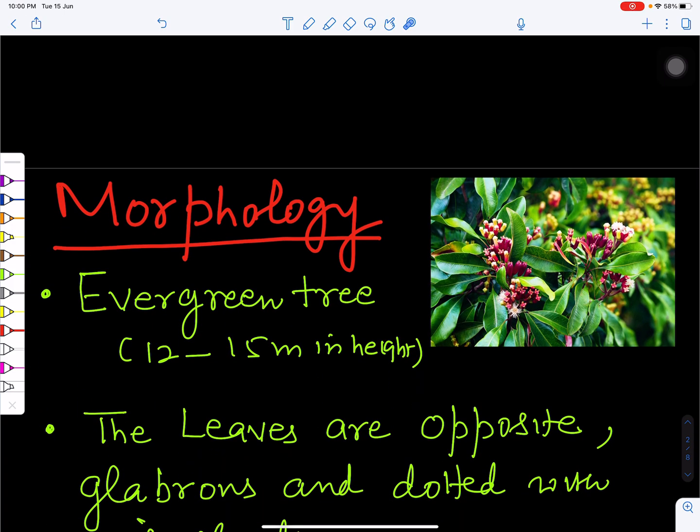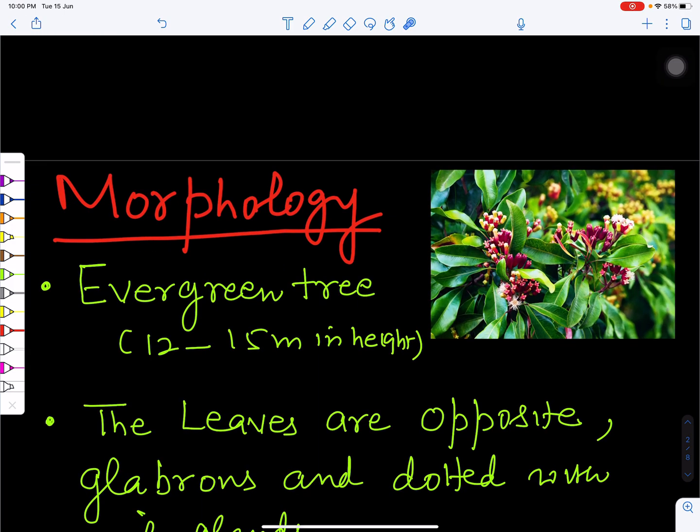Now if we see its morphology, that is its external characters. This is the plant of the clove. These are its flowers which are crimson red in color and these are its leaves. This plant remains evergreen tree - its leaves are not shed off from the plant.